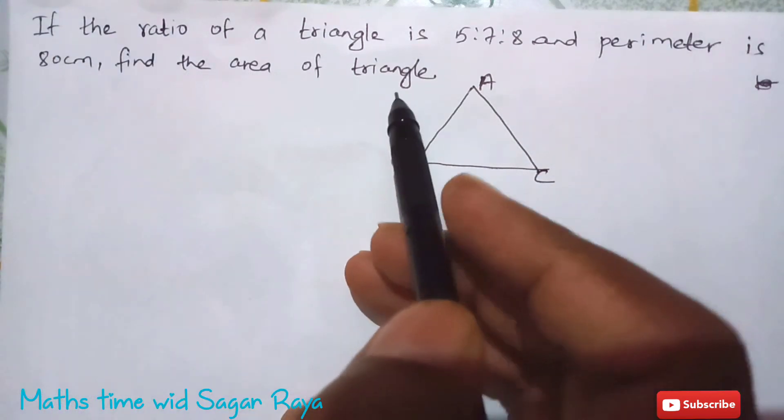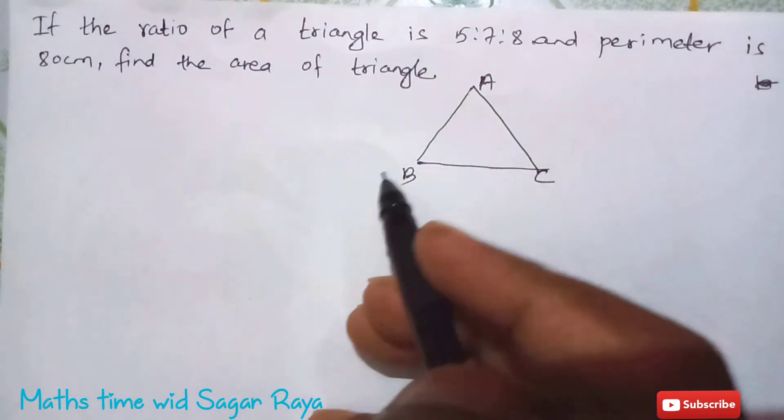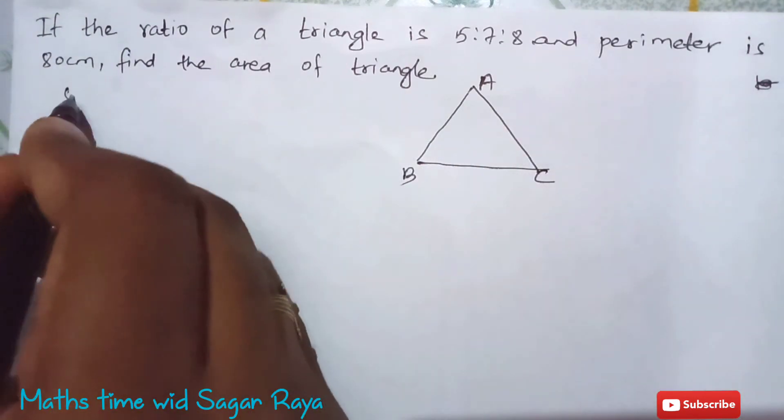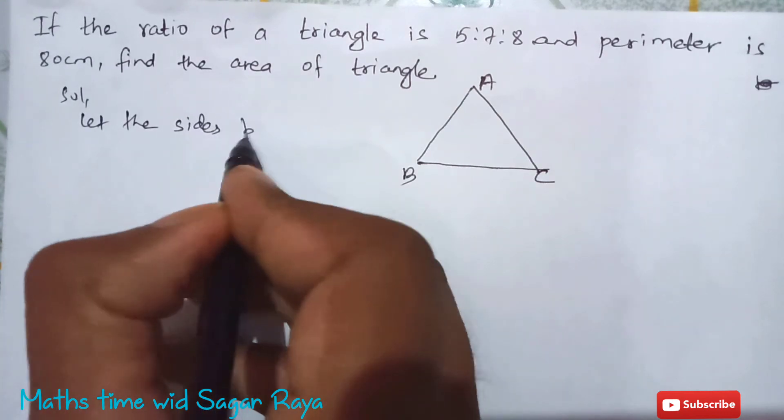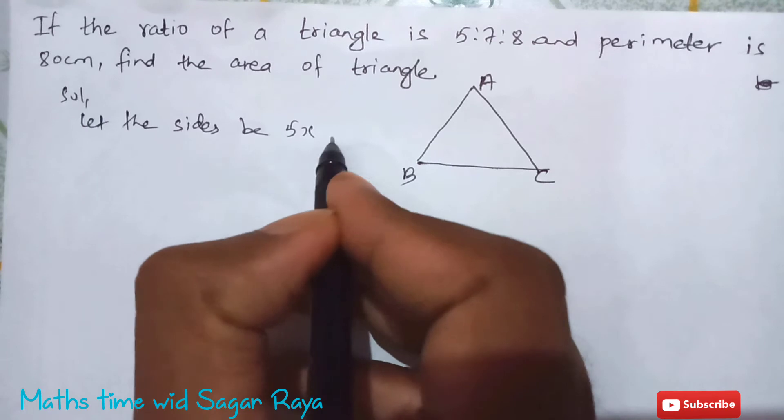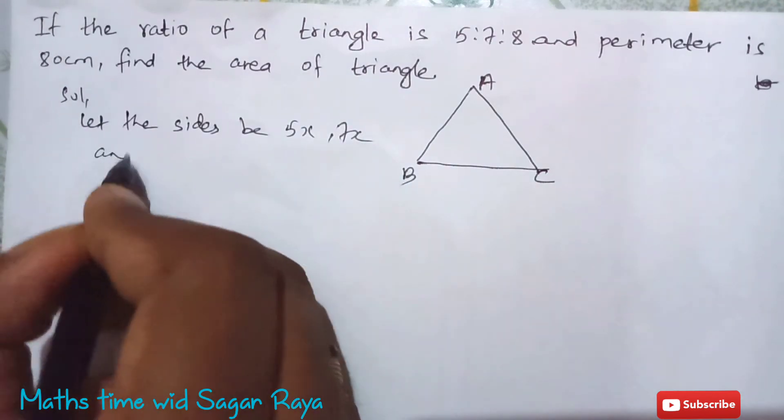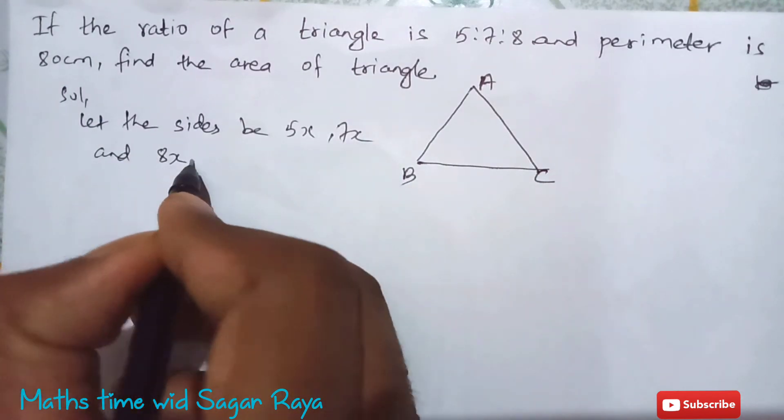The sides are given in the ratio, so I'm just supposing let the sides be 5x, 7x and 8x respectively.